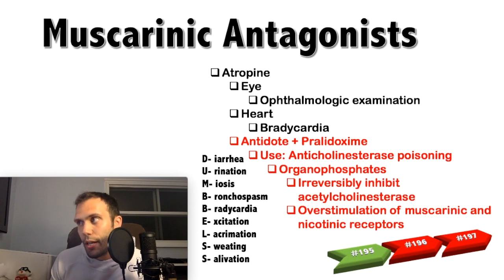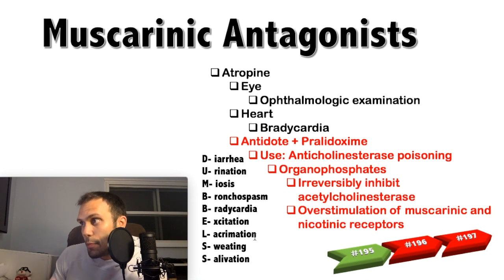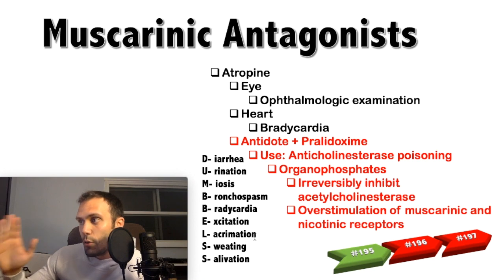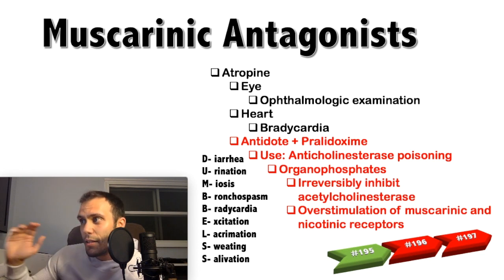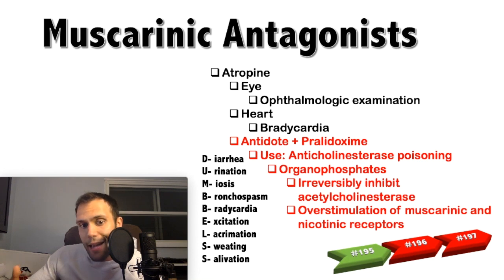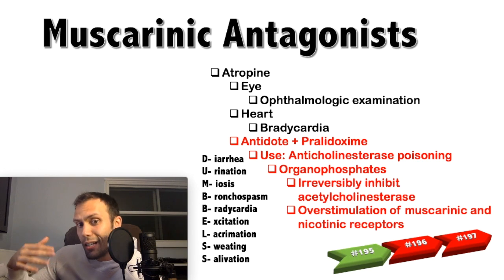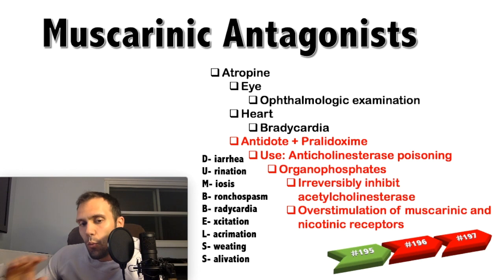This presents with the DUMBBELLS mnemonic: diarrhea, urination, miosis (pupillary constriction), bronchospasm, bradycardia, excitation, lacrimation, sweating, salivation — a cholinergic toxidrome with excess secretions. This commonly occurs with insecticides like malathion and parathion, or nerve gases. Farmers and industrial workers are the classic patients in board questions — put that together with the DUMBBELLS presentation.